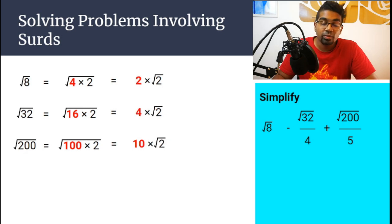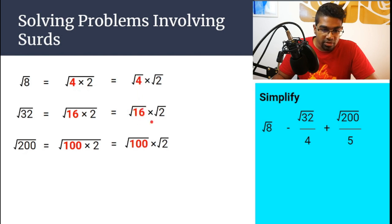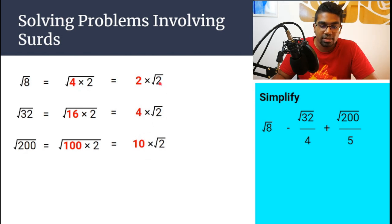Once we've done this, then we can actually square root the perfect square. So this is why we factorize the perfect square in the first step. Because when we square root a perfect square, we can get a whole number. So square root of 4 would give us 2, square root of 16 will give us 4, and square root of 100 will give us 10. So this is our step 2.